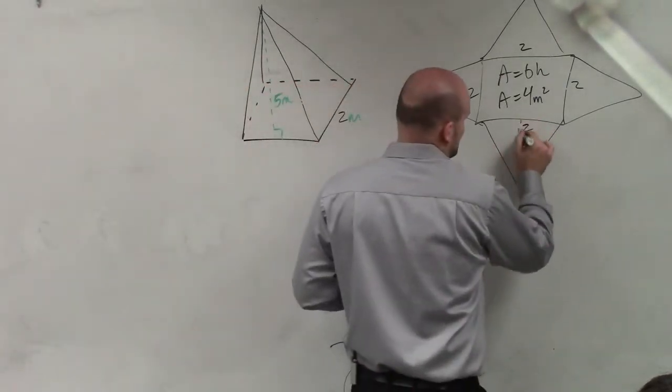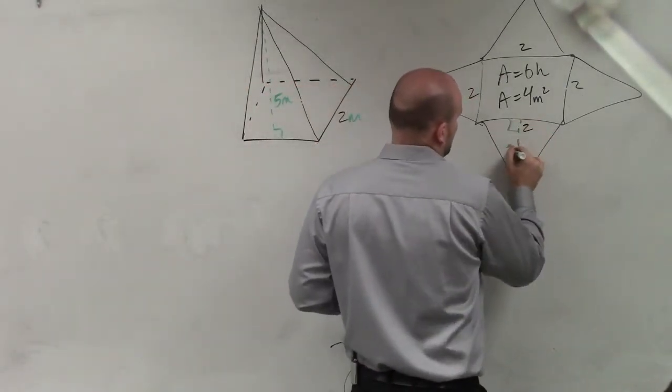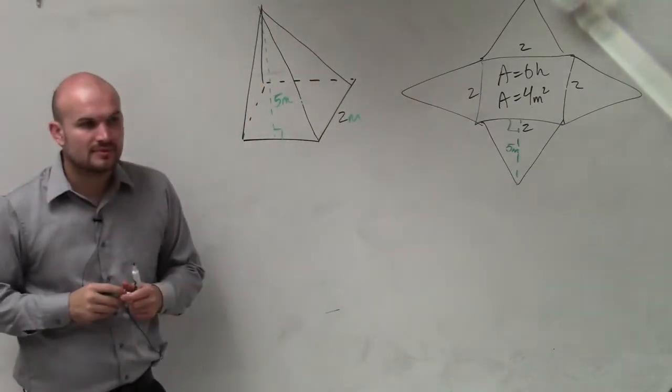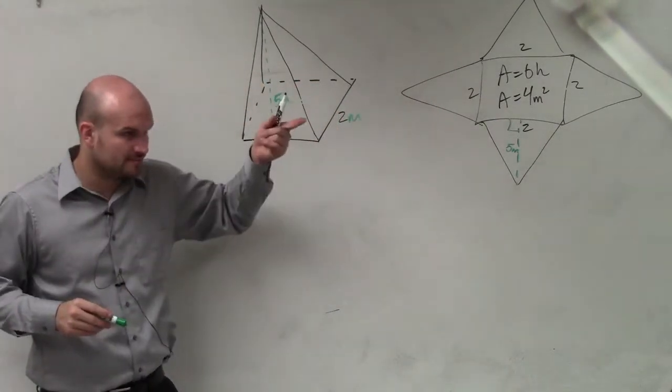So therefore, would it make sense that I can do this? And say that length right there is 5? And is that going to be the same for all of them? Yeah, OK.